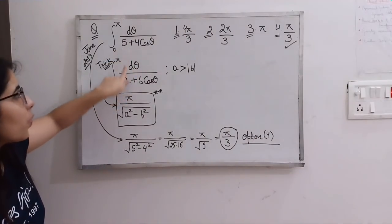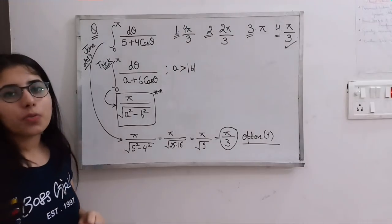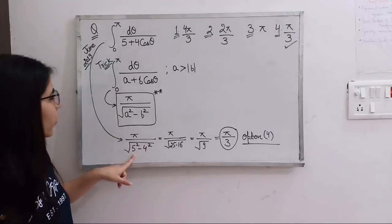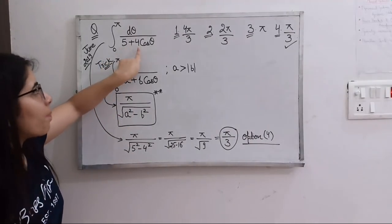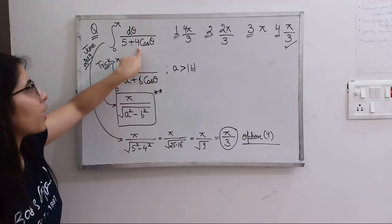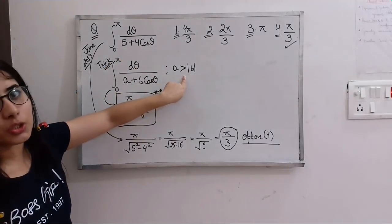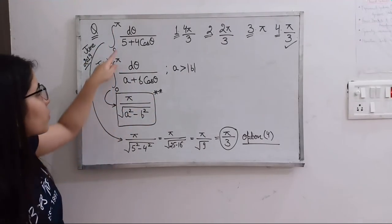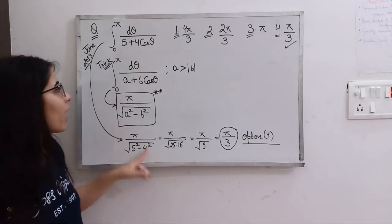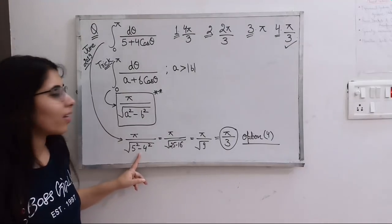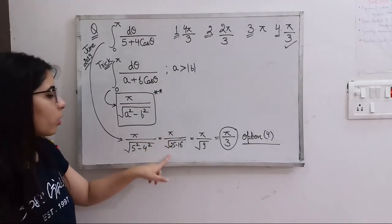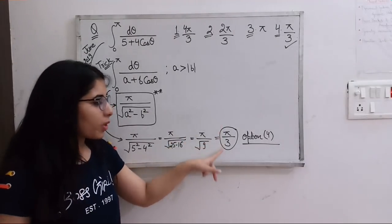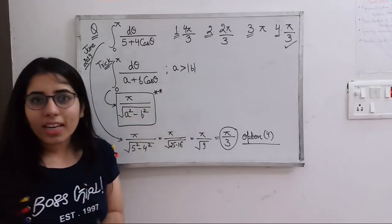This question is similar to that form, so the answer for this given question will be π upon √(a² − b²), where a = 5 and b = 4. We can see that 5 is greater than 4, which satisfies the condition, and the limits are the same as in the formula. So it will be π upon √(5² − 4²) = π upon √(25 − 16) = π upon √9 = π/3. Option 4 is the correct answer.